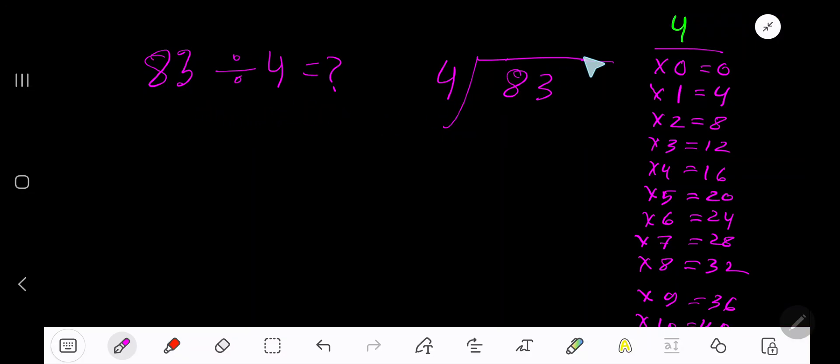83 divided by 4. Here 4 is the divisor, so we need the multiplication table of 4. 4 times 0 is 0, 4 times 1 is 4, 4 times 2 is 8. To find the multiplication table of 4, just add 4 to the previous step: 0 plus 4 is 4, 4 plus 4 is 8, 8 plus 4 is 12, 12 plus 4 is 16, 16 plus 4 is 20.